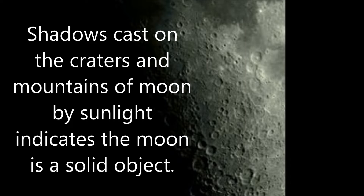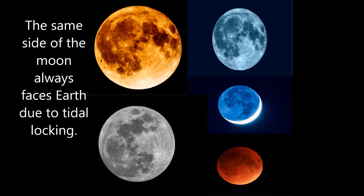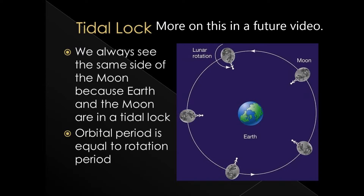Shadows cast on the craters and mountains of the moon by sunlight indicate the moon is a solid object. The same side of the moon always faces the earth due to tidal locking. Here is a diagram of tidal locking. More on this in a future video.